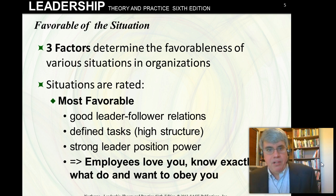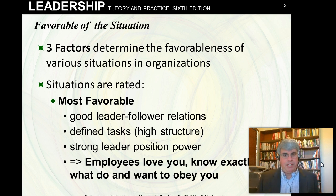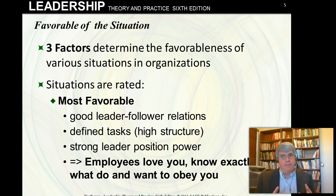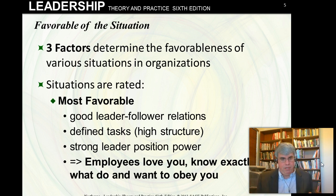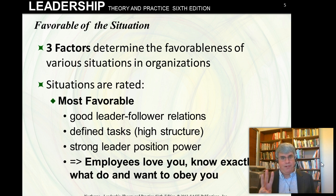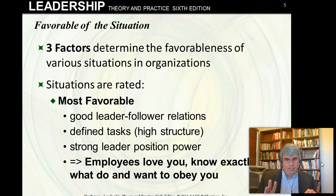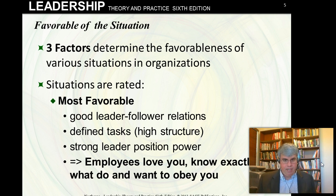The second variable is the favorableness of the situation — how good it is for the supervisor, how likely success is. In this model, there are three categories of situational favorableness, and that's really important because it determines which leadership style is most effective.